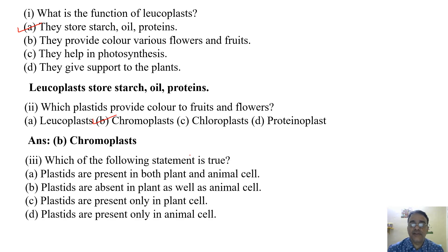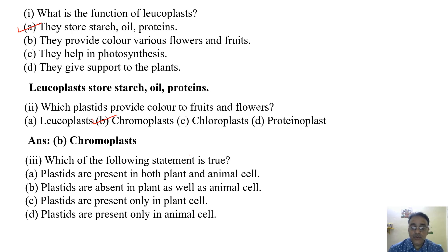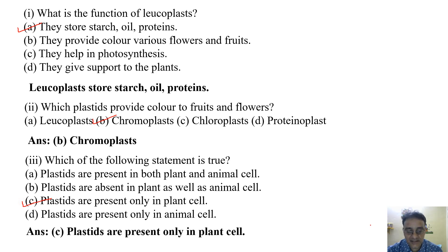The third question: Which of the following statements is true? Plastids are present in both plant and animal cells; plastids are absent in plant as well as animal cells; plastids are present only in plant cells; or plastids are present only in animal cells. The correct option is C — plastids are present only in plant cells.